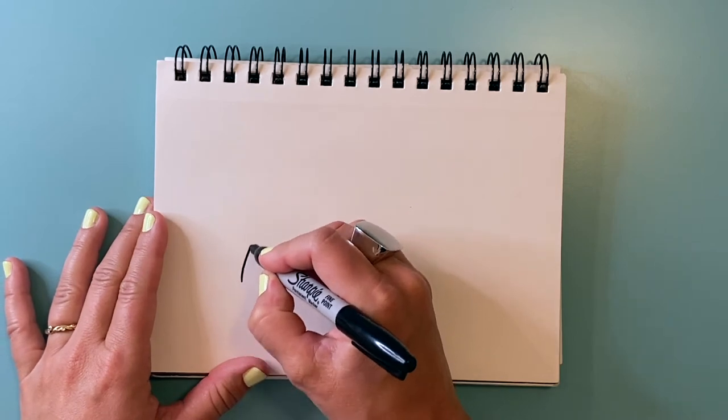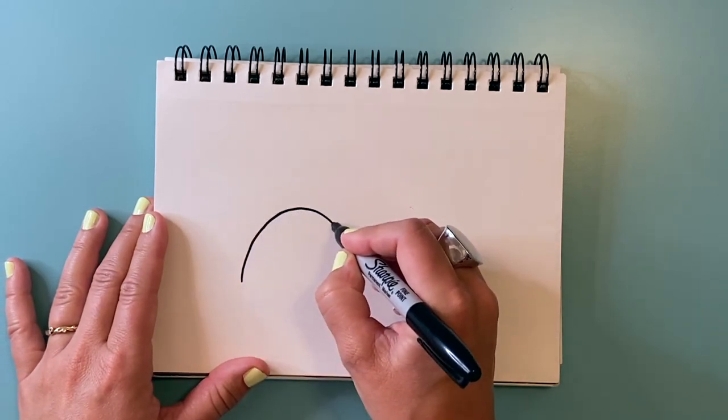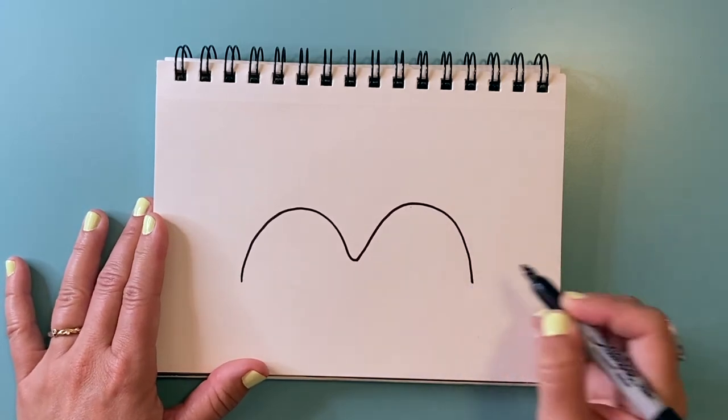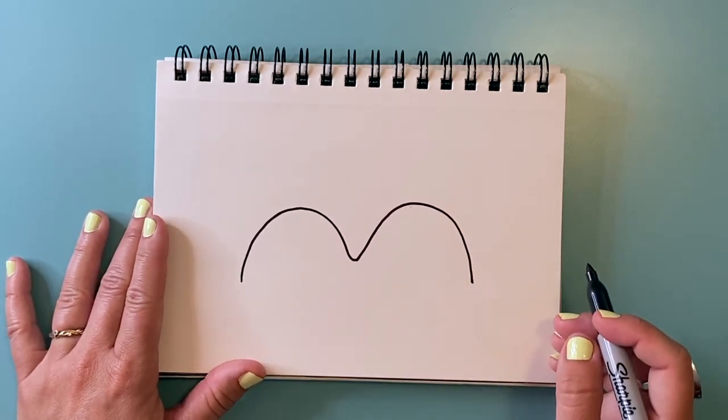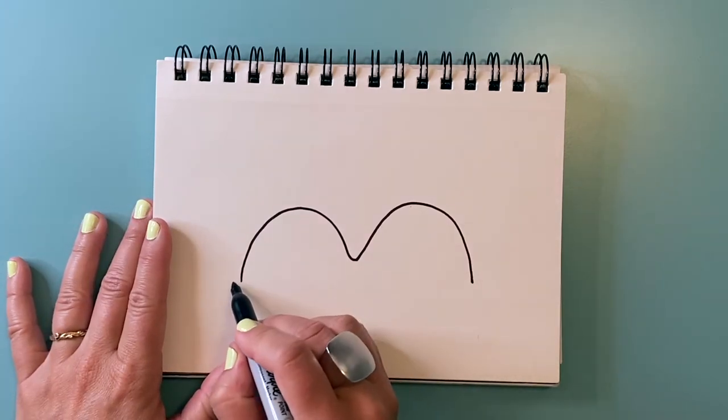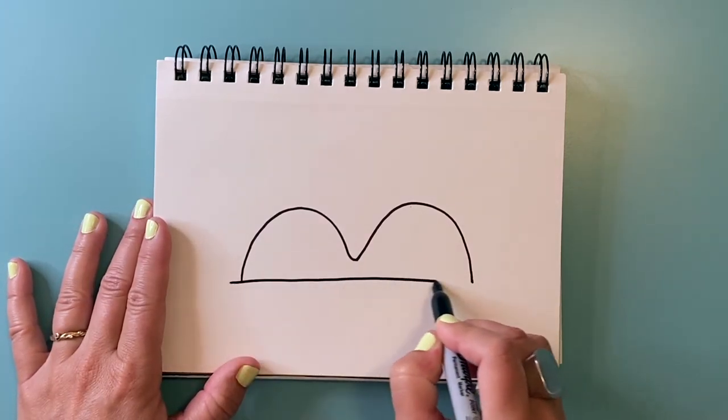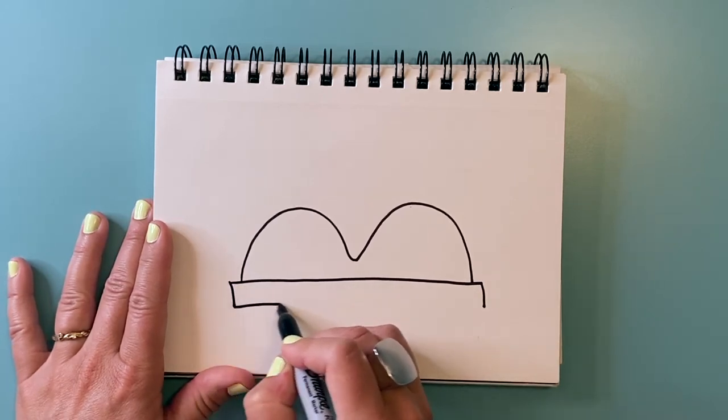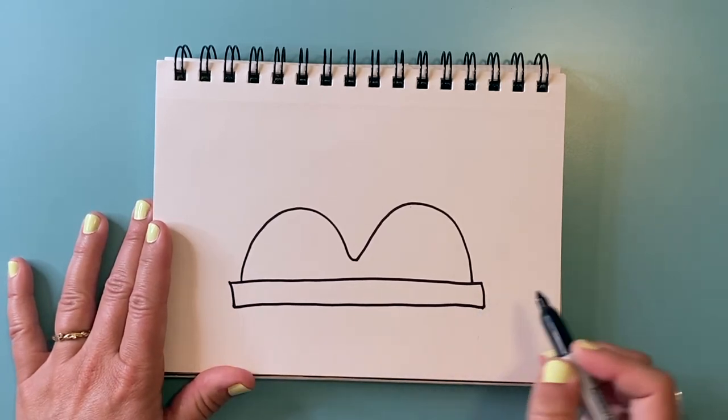You are going to make kind of like a double camel hump, like a big M. That's gonna be the front of our VW bug. And then you need a long rectangle underneath it. That's gonna be the bumper.